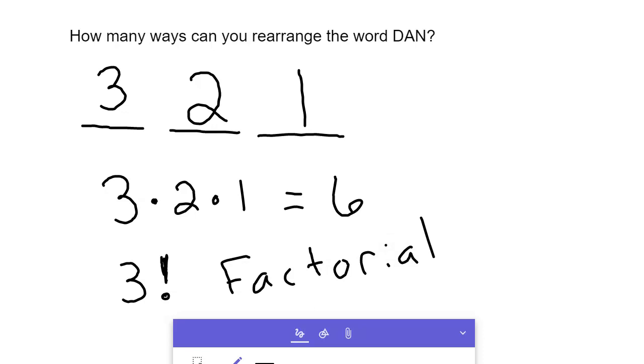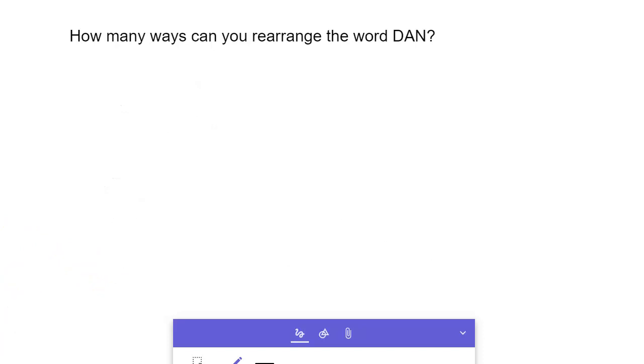So now let's look at it in a tree diagram. In a tree diagram, we would have three choices to begin with. We could either have a D, an A, or an N. Then once we choose a choice, then we can have two more choices. So, we could have an A or an N here. And then after we choose that, we only have one choice. So, if we chose D and A, then N is the only one left. And if we went D and N, then A is the only one left.